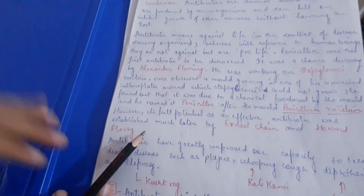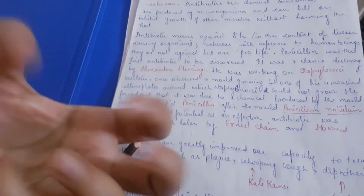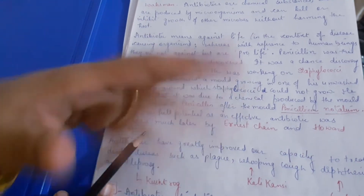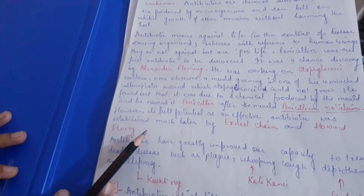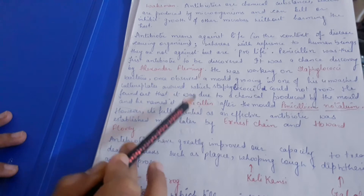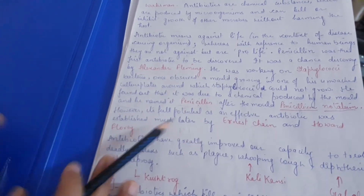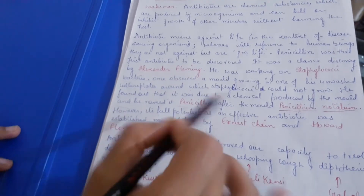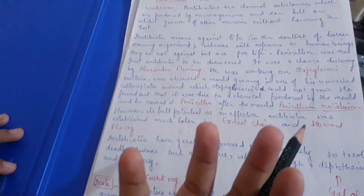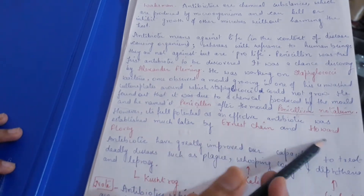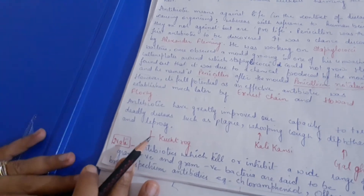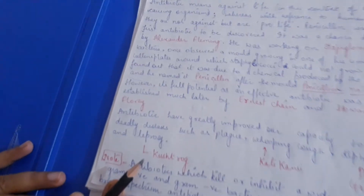Fleming observed that the mold growing in the petri dish was secreting a chemical — penicillin — which killed the bacteria around it. That is why the bacteria did not grow. So he discovered the antibiotic penicillin. Later, the full development of penicillin was completed by Ernest Chain and Howard Florey.